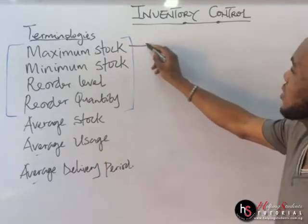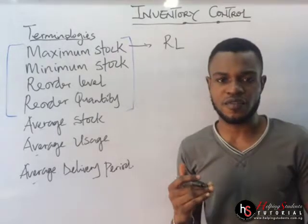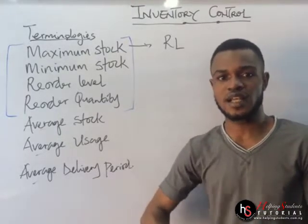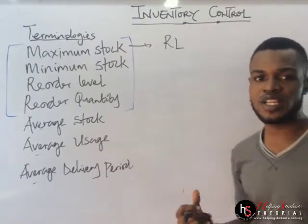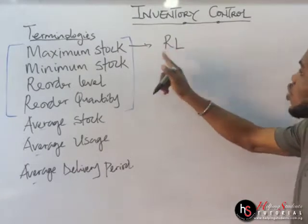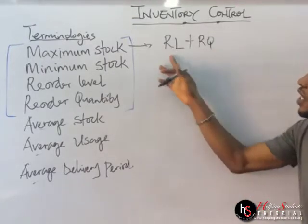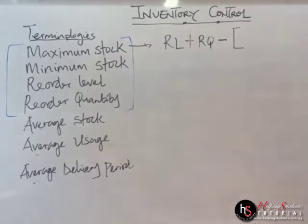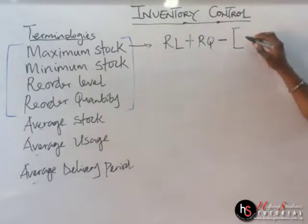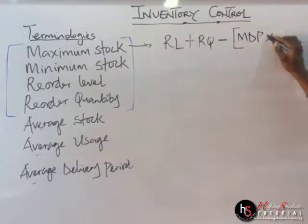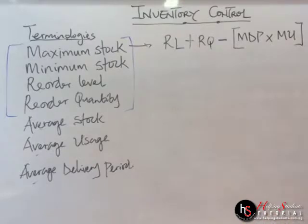The formula for maximum stock is: reorder level plus reorder quantity minus, in brackets, the minimum delivery period times minimum usage. Please don't abbreviate in your exams — write terms in full under the formula. I'm abbreviating here only to save space and help you remember the formulas more easily.